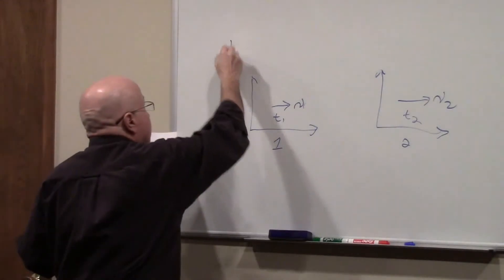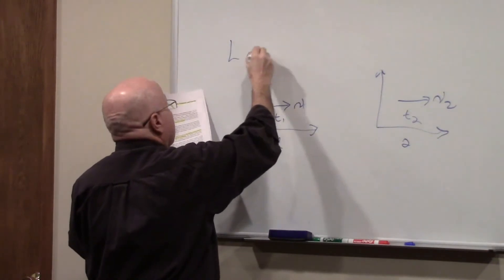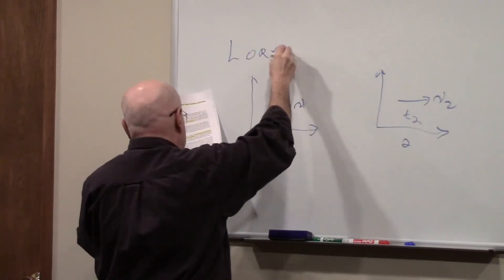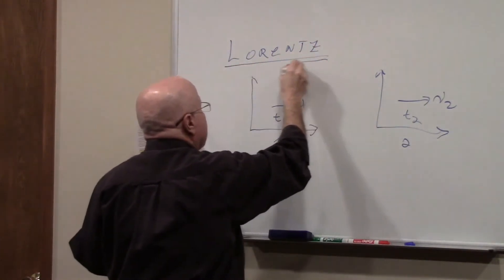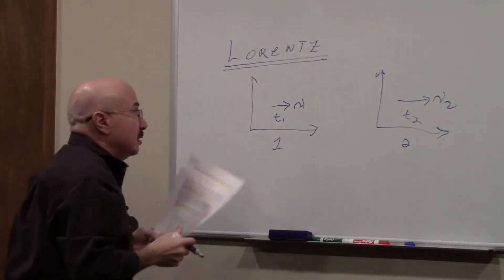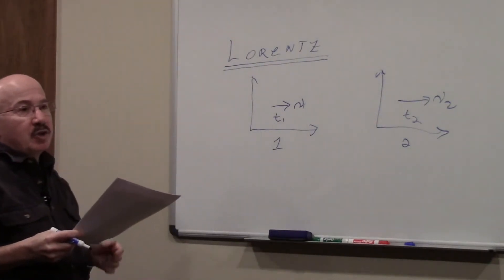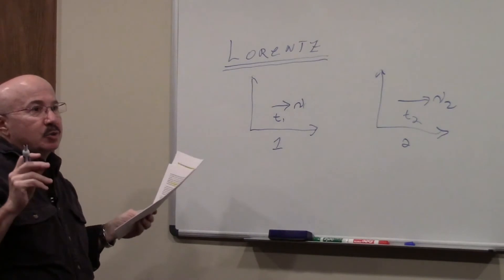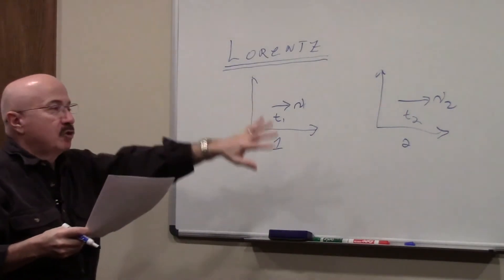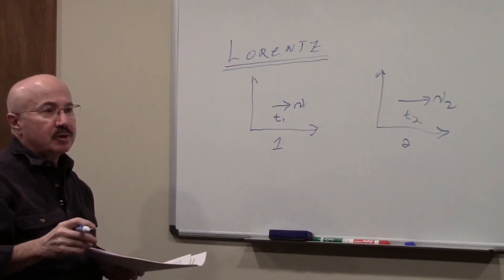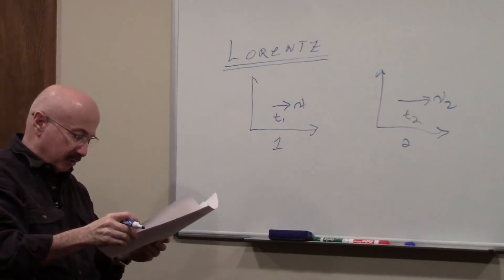He came up with the Lorentz transformation. That's spelled L-O-R-E-N-T-Z. This transformation is what Einstein used to facilitate the transformation of coordinates to different inertial frames of reference for his special theory of relativity.